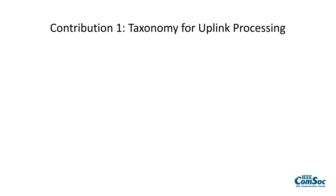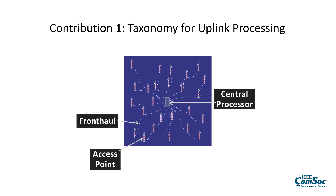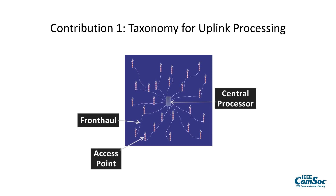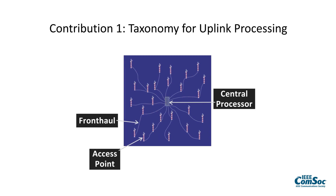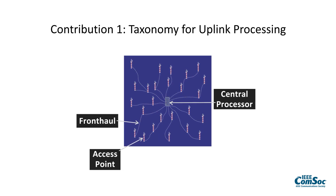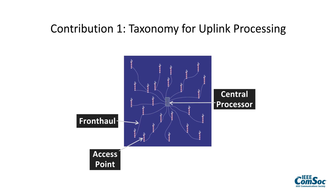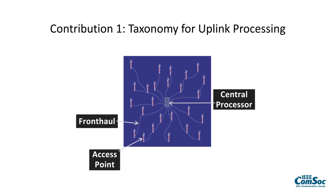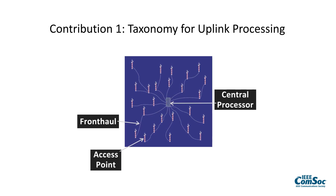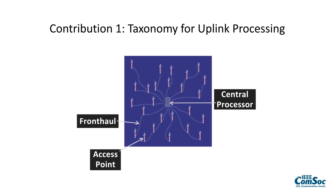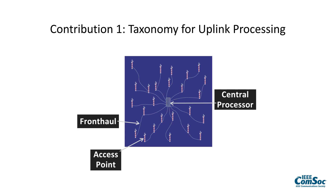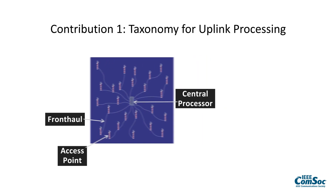In this paper, they make three main contributions. The first one is that they introduce a taxonomy of how the uplink processing can be organized in a network like this. We have these access points and the central processing unit, and we can distribute the processing between these points in different ways.